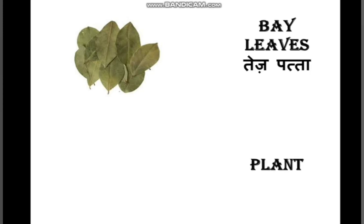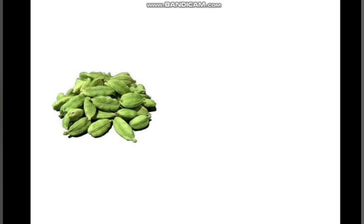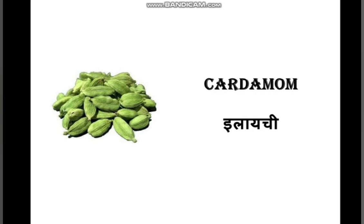Now, this leaf-like structure — what is the name of this spice? This is the picture of bay leaves, and this is the picture of its plant. Bay leaves. Now the next picture — this is the picture of cardamom, which in Hindi is called ilai chi.